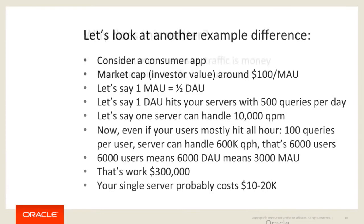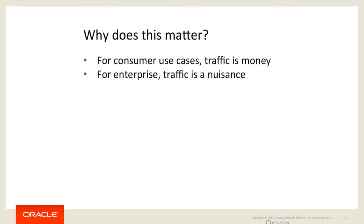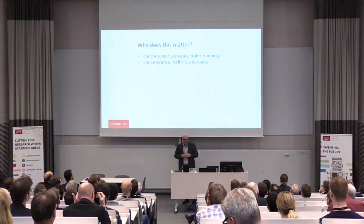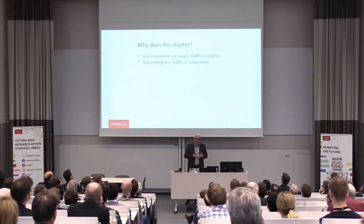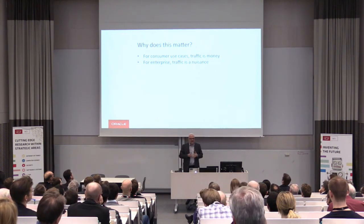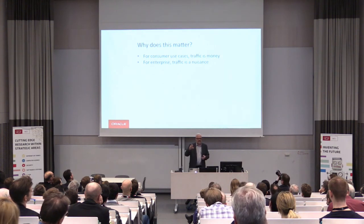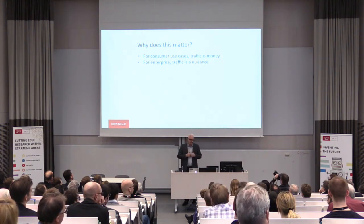Engineering is always about trade-offs. Whereas for enterprise, it's kind of the opposite — a lot of traffic is like a nuisance, they try to reduce it. You don't make money on it. The number of queries that an airline booking system gets — they don't make money on it unless you're actually buying a ticket. You can see this discrepancy — I picked the airline thing because it's a very good example.